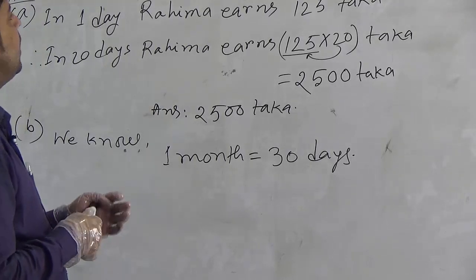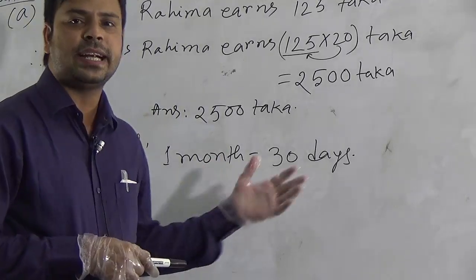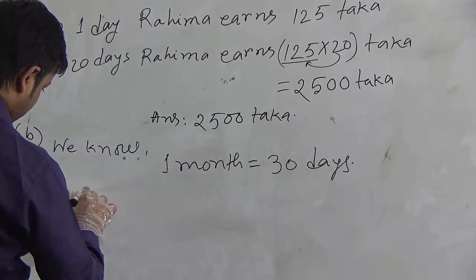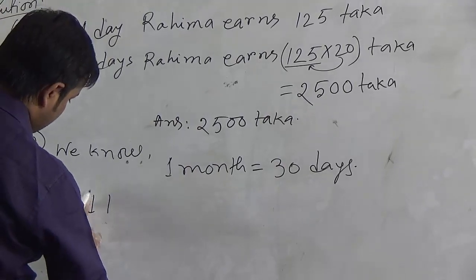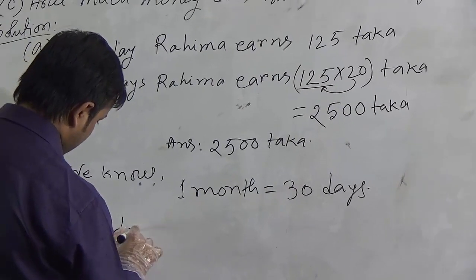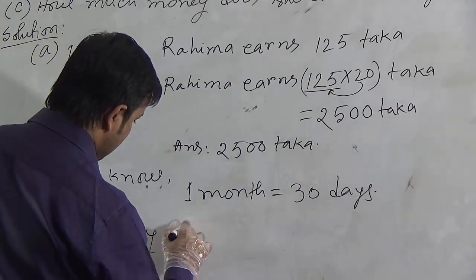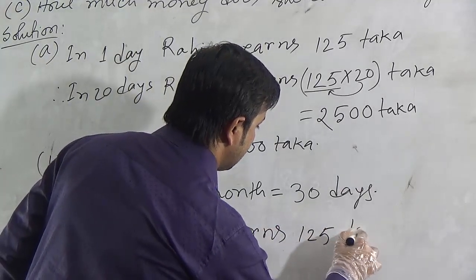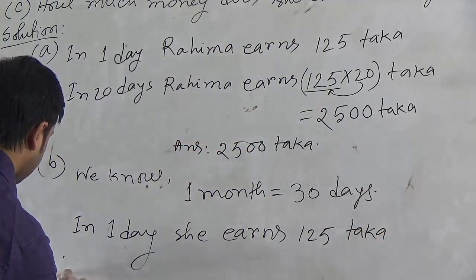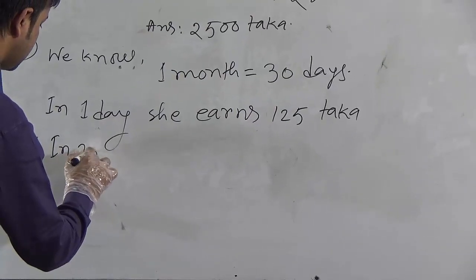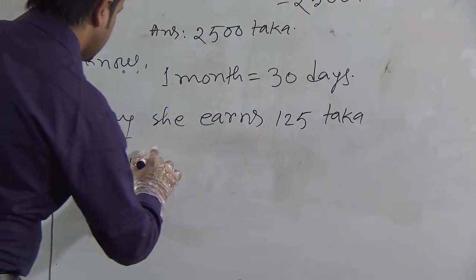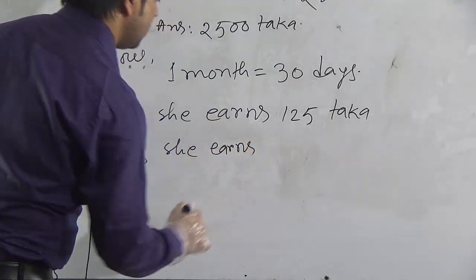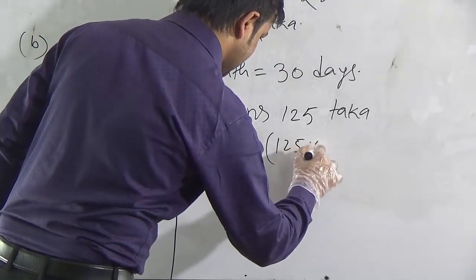So, if we find the earning of Rohima for 30 days, we will get the required answer. In 1 day she earns 125 Taka. Therefore, in 30 days, she earns, we have to multiply 125 by 30.